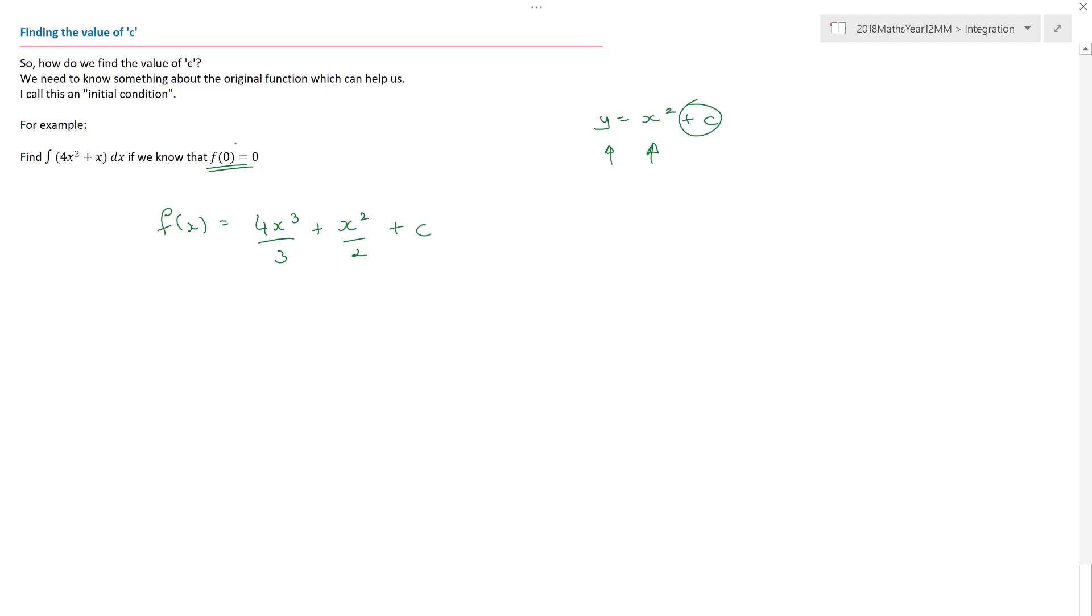So I now know that f of x can be given by four x cubed on three plus x squared on two. And I have to do plus C. And it tells me that when x equals zero, my function is equal to zero. So when x equals zero, so there's my function being equal to zero. Well, that zero, that zero plus C. Therefore, C is equal to zero.